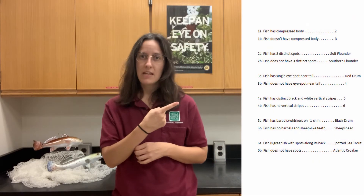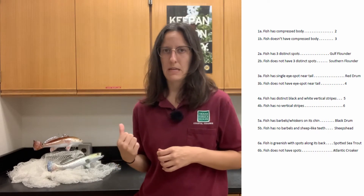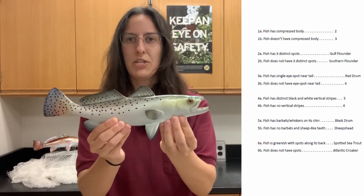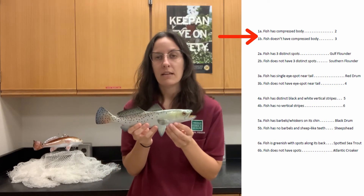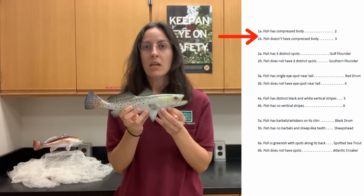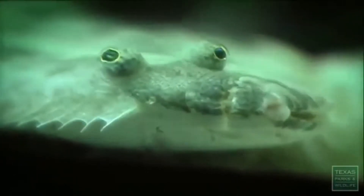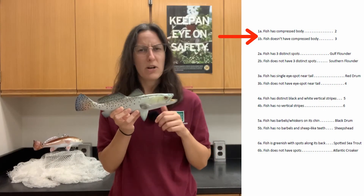So now let's use a different key to identify a fish species. The key is now up on the side of the screen and the fish we're going to identify is right back here behind me. Step one — remember we always want to start with step one — is asking us whether or not our fish has a compressed body shape. When we say compressed body shape, we're pretty much talking about a flat fish, things like flounder. Flounder have both eyes on one side of their head and spend most of their time laying on the bottom of the ocean.